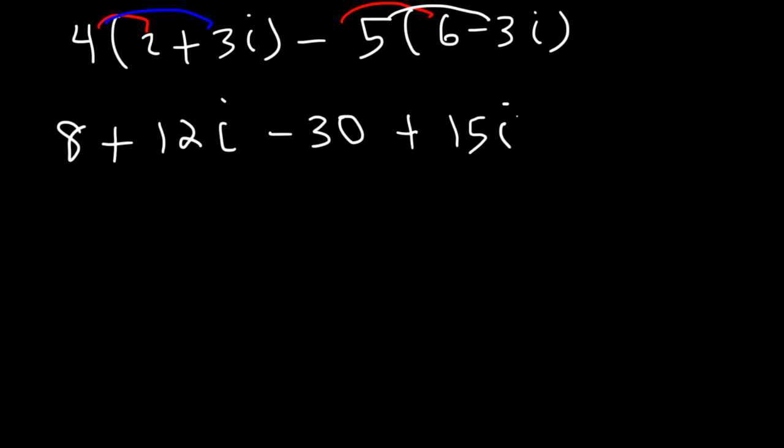So now let's go ahead and combine like terms. So 8 minus 30 is negative 22, and 12i plus 15i, that's 27i. And so this is the answer.